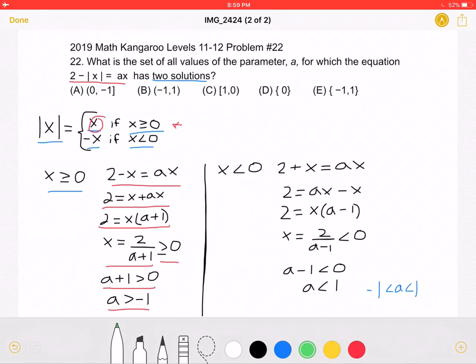Now, let's look at the other case. If x is less than 0, like here, absolute value of x would be equal to negative x, which means that 2 plus x would be equal to Ax, using the equation from over here.